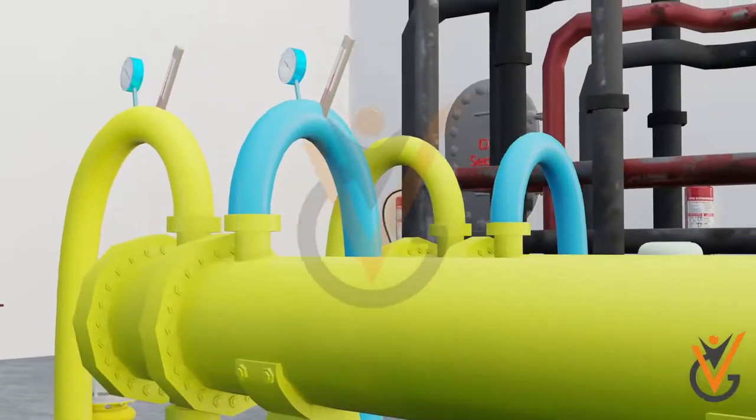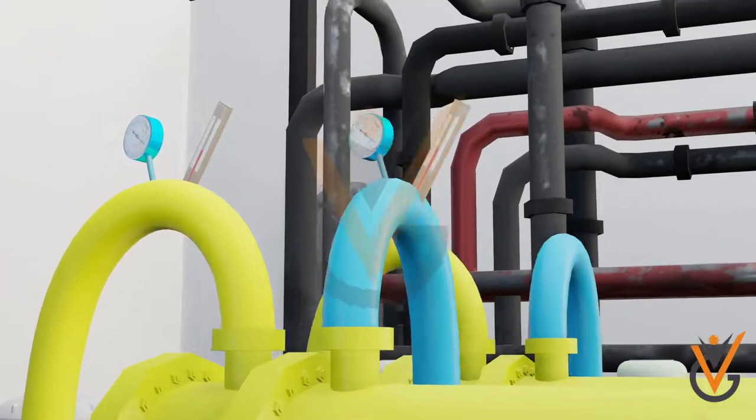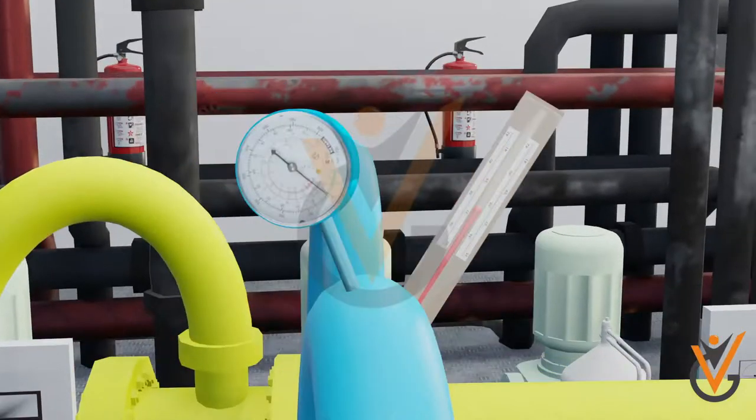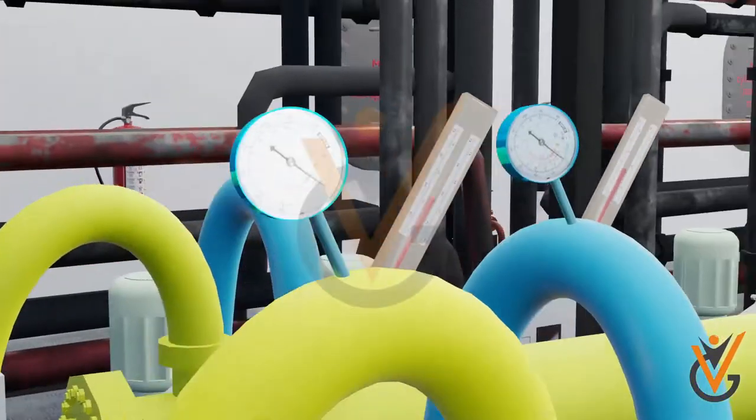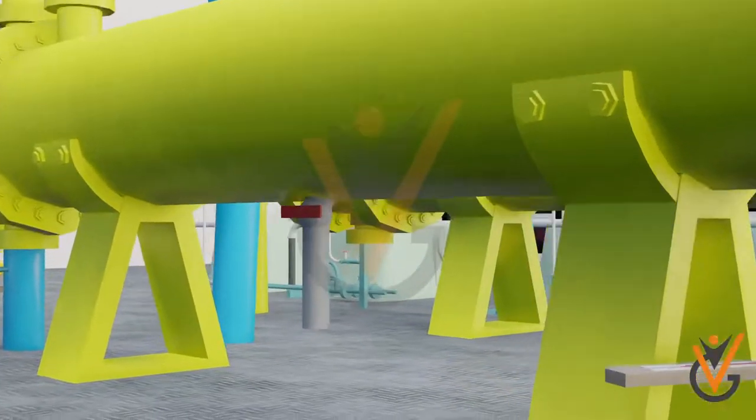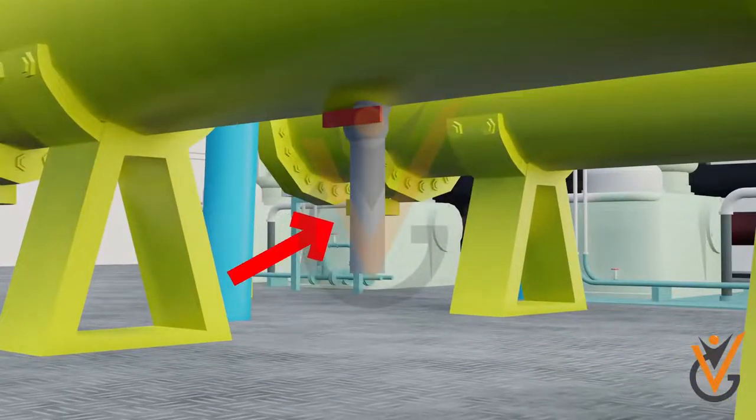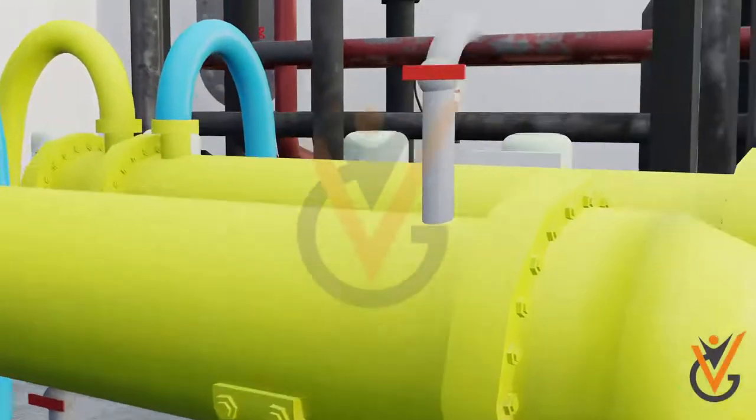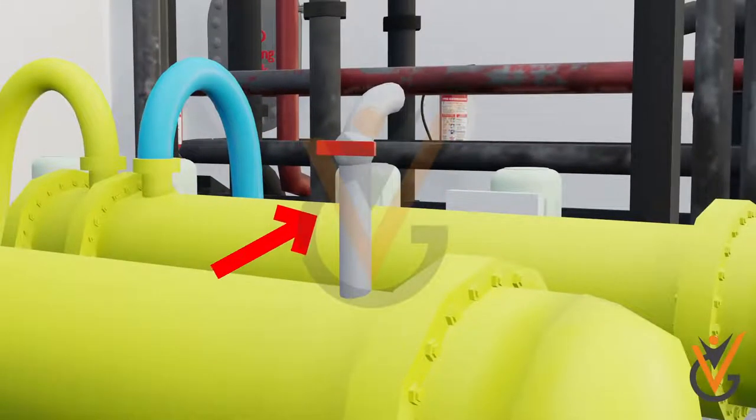Temperature and pressure gauges are fitted at the inlet and outlet flanges of both sea water and lube oil to monitor the operation of the heat exchanger. A drain valve is provided for both sea water and lube oil. An air vent valve is provided for venting out trapped air inside the shell of the heat exchanger.